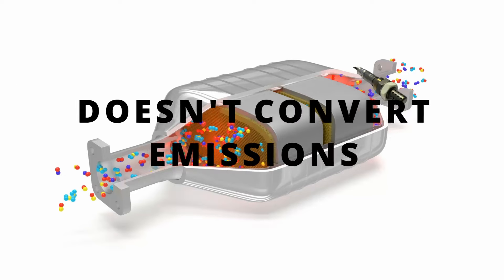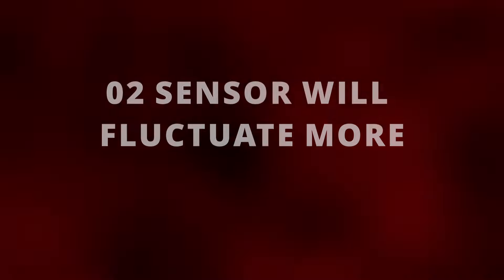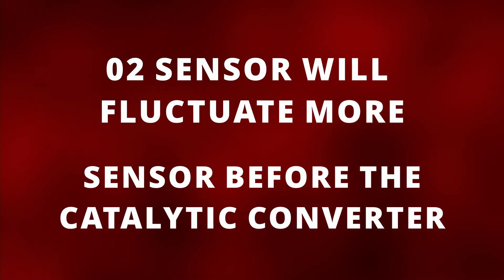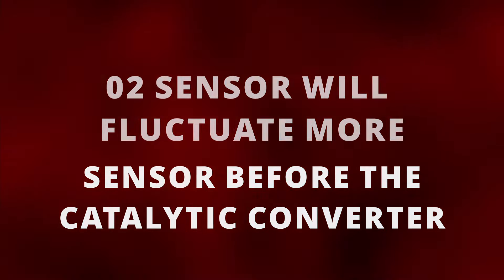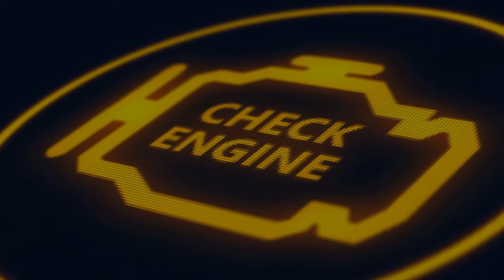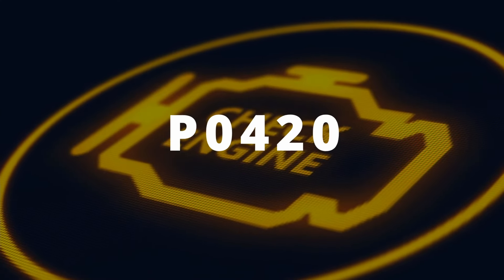When the catalytic converter doesn't convert these emissions, that's when the oxygen sensor will begin to fluctuate more and act like the sensor before the cat. This is when the ECM reads this data and turns on the check engine light for the P0420 code.